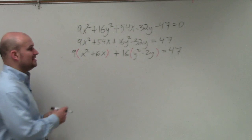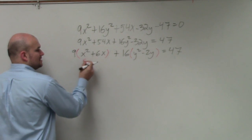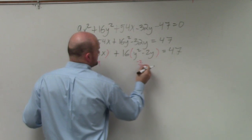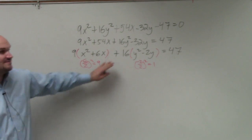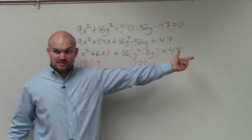All right. So now, for each one of these, we need to complete the square. So we're going to complete the square twice. 6 divided by 2 squared equals 9. Negative 2 divided by 2 squared equals 1. So now we're going to take these values, add it not only inside my parentheses, but to the other side, right?